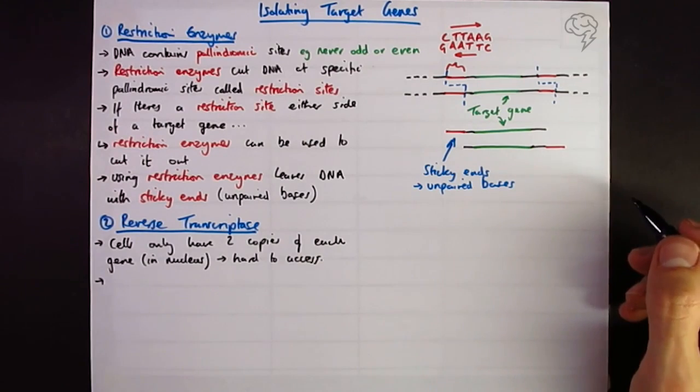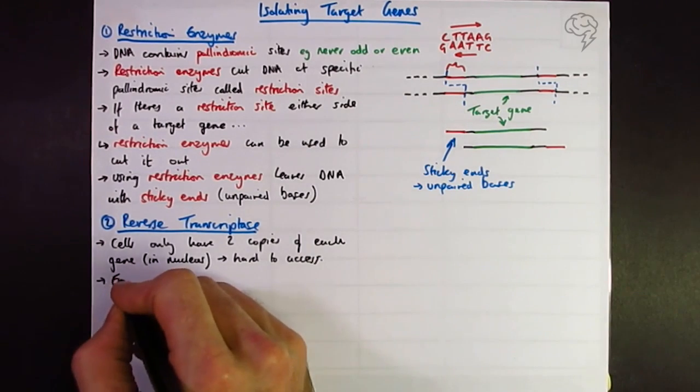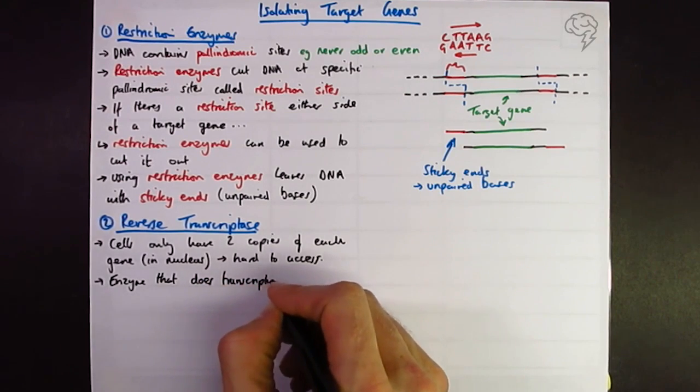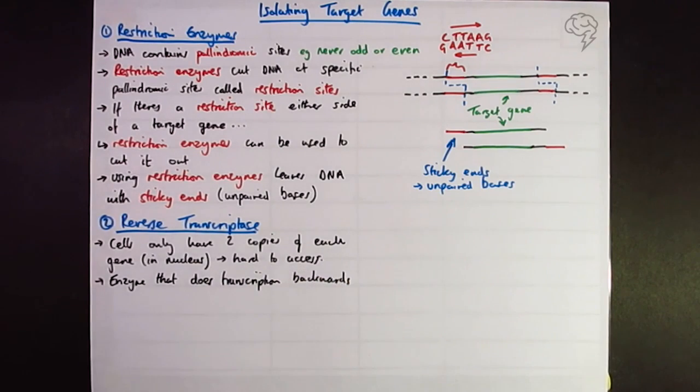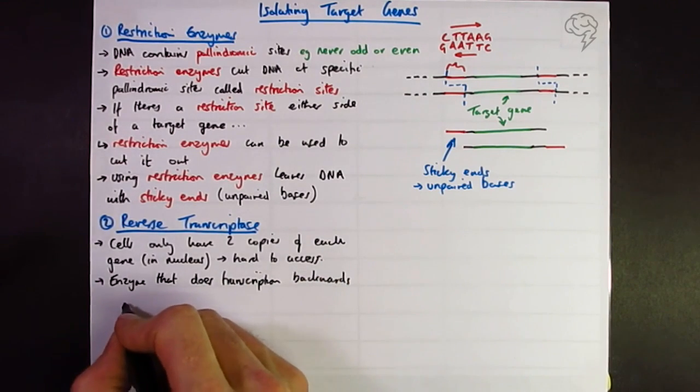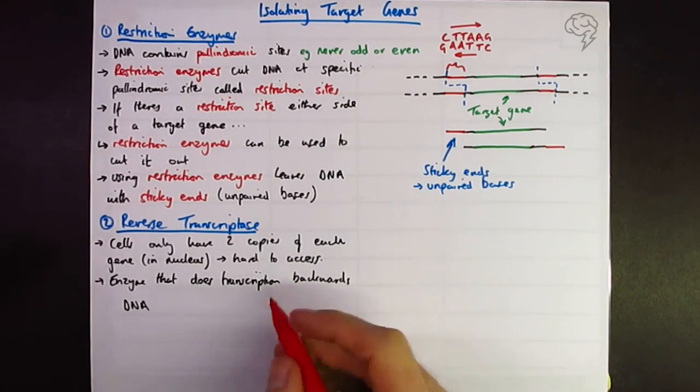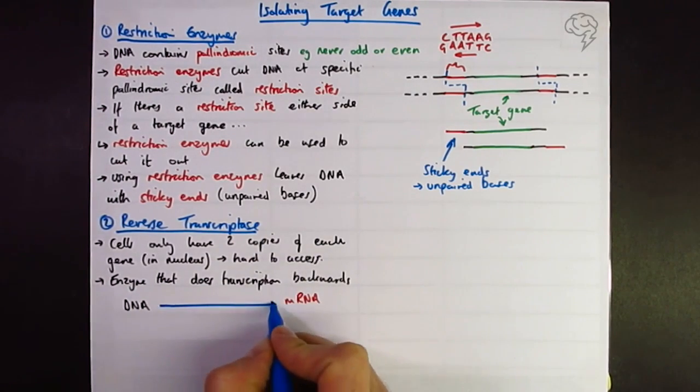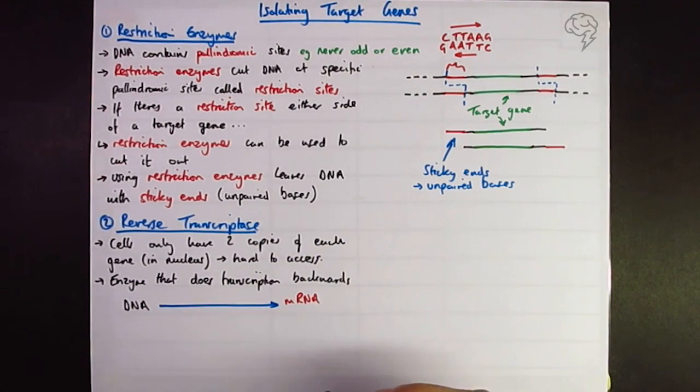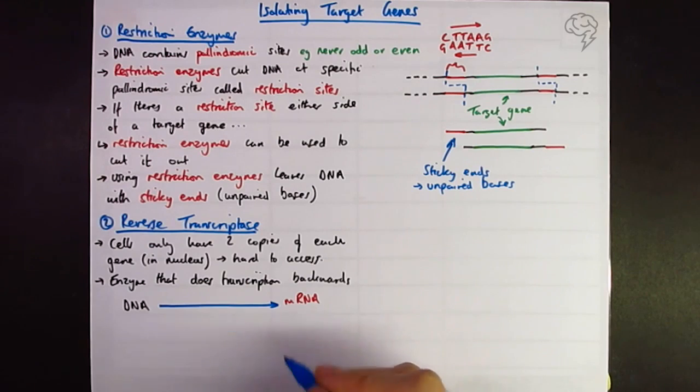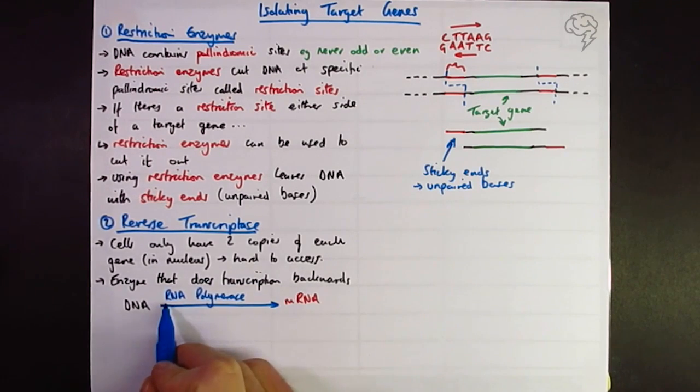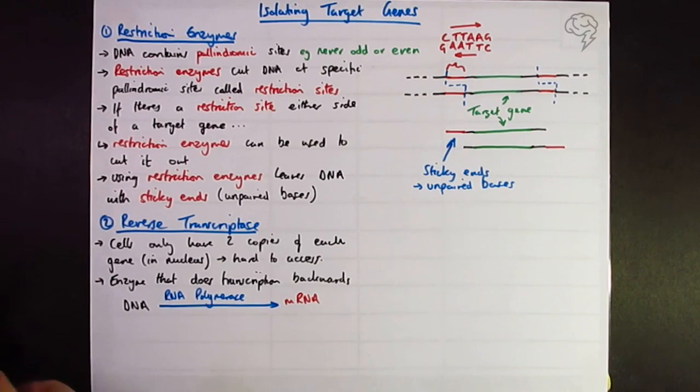And they're both in the nucleus, not the easiest place to access. But we can take, this is actually an enzyme from a virus that does transcription backwards. So normally, transcription is going to go from DNA to messenger RNA, and this is done by the enzyme RNA polymerase. They do like to test you on your enzymes, make sure you're clear with them. So it's an enzyme that makes the polymer of RNA. We're making RNA straightforward.